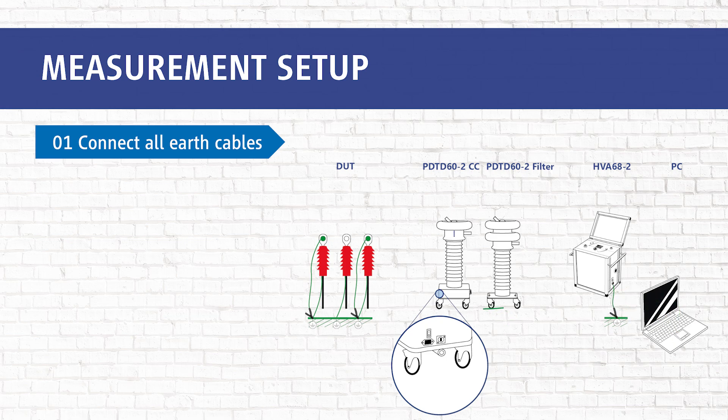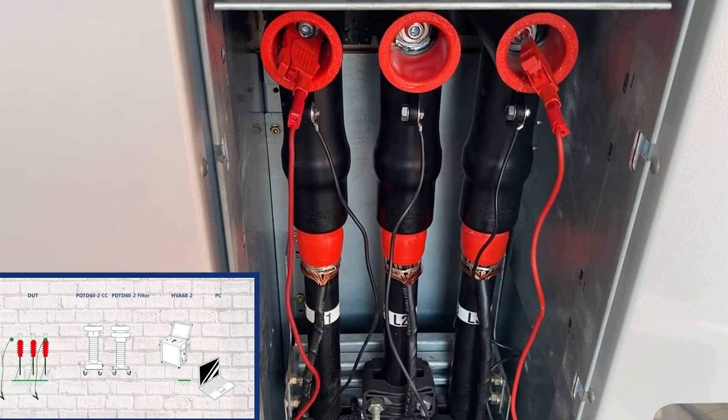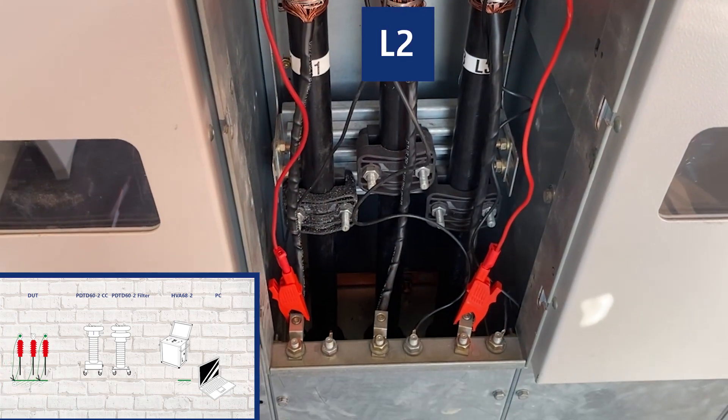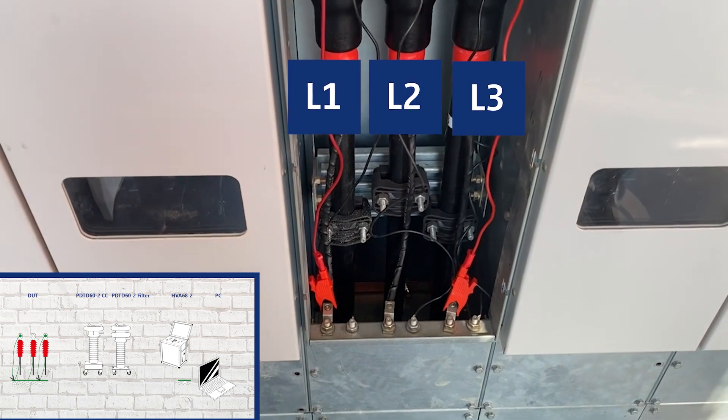In step 1 we connect all earth cables. First the DUT. In this case L2 is our DUT, we short circuit L1 and L3.